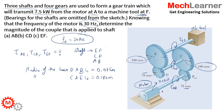The frequency of the motor is given as 30 hertz, and the motor is connected to shaft AB, so the frequency of shaft AB equals the frequency of the motor. Therefore, the angular velocity of shaft AB is 2π times frequency, which gives 2π × 30 = 60π radians per second.